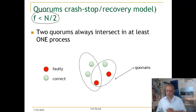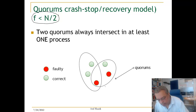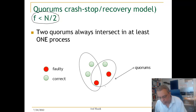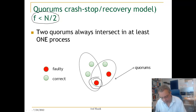The first property is that two quorums always intersect in at least one process. Because a quorum has a majority — more than half — two quorums must always intersect. This intersection could be a correct process or a faulty process; the picture shows an intersection in a faulty process.